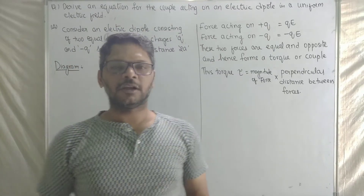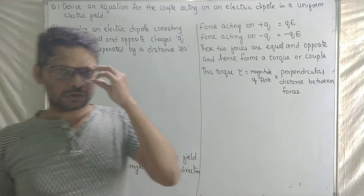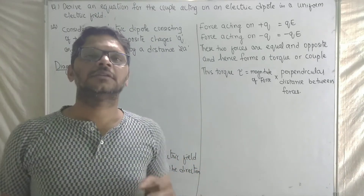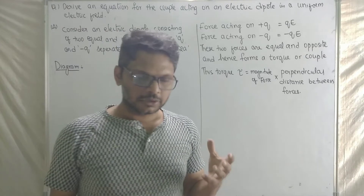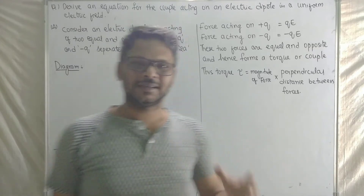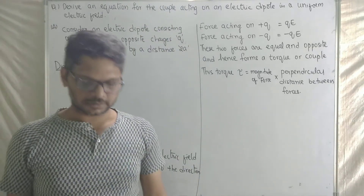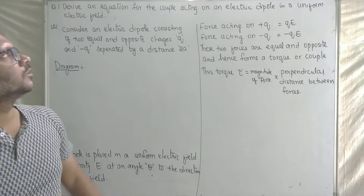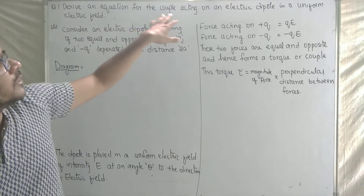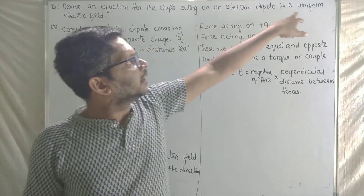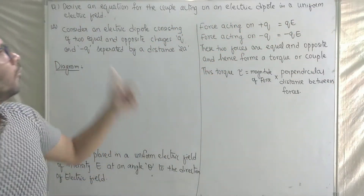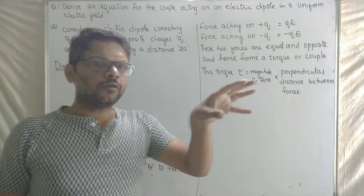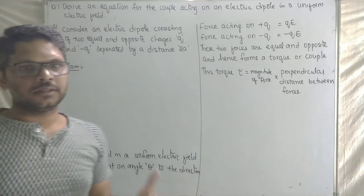Hi students, welcome to the channel Physics with Kiran Kumar. In the 'Physics Simplified' series, we are going to look at short answer questions related to Electric Charges and Fields. The next short answer question is: derive an equation for the couple acting on an electric dipole in a uniform electric field.